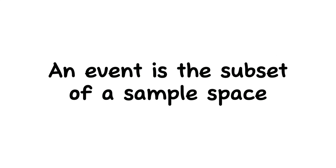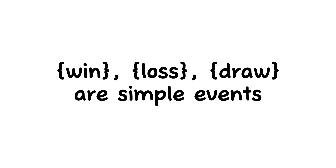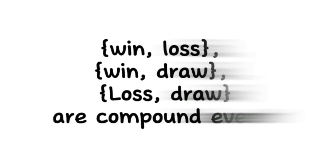An event is simply a subset of the sample space of an experiment. For the football match with sample space {win, loss, draw}: win is a subset of the sample space, so win is an event; loss is also an event; and so is draw. If I take just one outcome from the sample space, it is called a simple event — so {win} is a simple event, {loss} is a simple event, and {draw} is a simple event. When I take two members from the sample space, it is called a compound event — for example, {win, loss} is a compound event, and {win, draw} and {loss, draw} are also compound events.